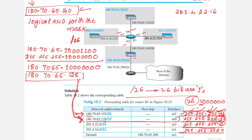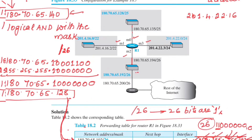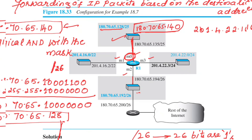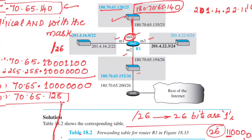Since there is a match, the router places the packet on interface M0. So the packet with destination 180.70.65.140 belongs to this network. Now, using the same problem statement, suppose a second destination packet is given: 201.4.22.116. We follow the same procedure.